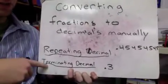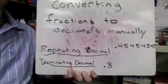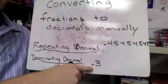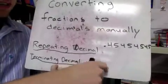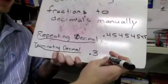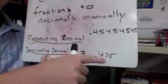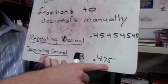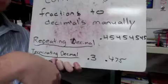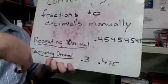A terminating decimal just means the decimal number stops somewhere. Three-tenths would be an example of a terminating decimal because there's nothing after it. Another example would be 0.475 — it just stops after the five; nothing else continues, no pattern or anything like that.